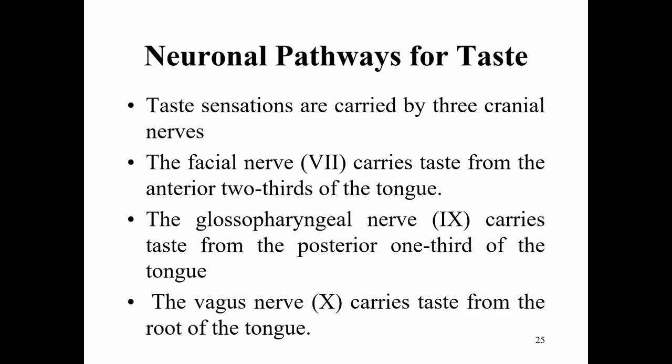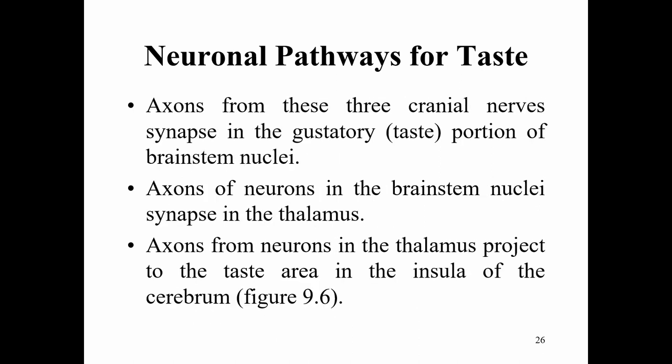For the neuronal pathways of taste, taste sensations are carried by three cranial nerves. Cranial nerve seven, the facial nerve, carries taste from the anterior two-thirds of the tongue. Cranial nerve nine, the glossopharyngeal nerve, carries taste from the posterior one-third of the tongue. The vagus nerve carries taste from the root of the tongue. Axons from these three cranial nerves synapse in the gustatory portion of the brainstem nuclei, then to the thalamus, and axons from the thalamus project to the taste area in the insula of the cerebrum.